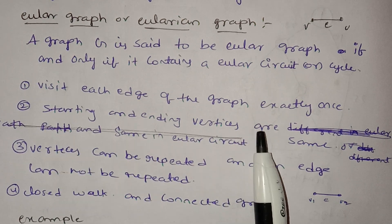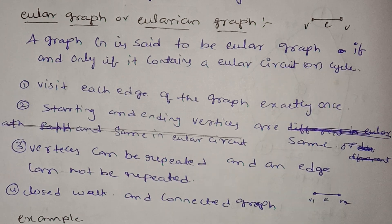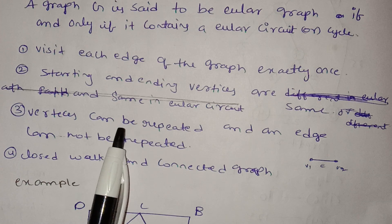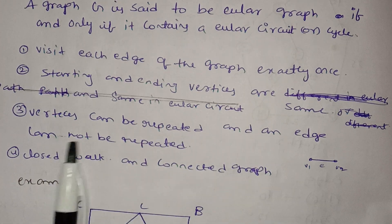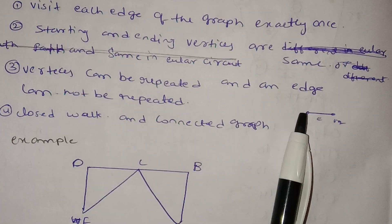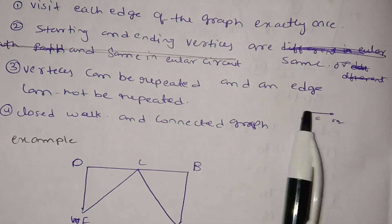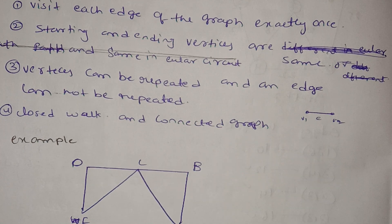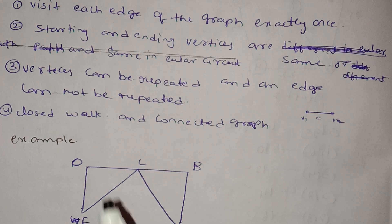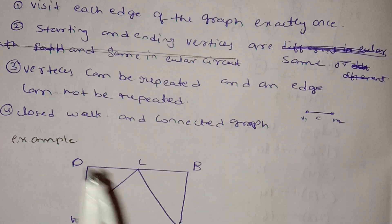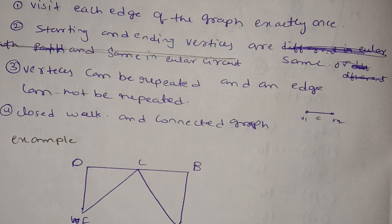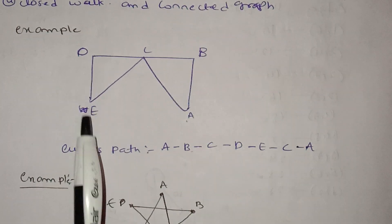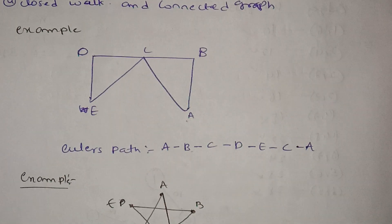In Euler's circuit, the starting and ending vertex must be the same. The graph must be connected. Here is a graph with vertices A, B, C, D, E. We look at the closed circuits and identify where Euler's path is.